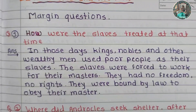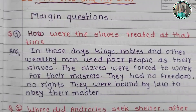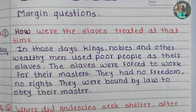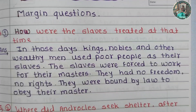Question number one: How were the slaves treated at that time? In those days, kings, nobles and other wealthy men used poor people as their slaves. The slaves were forced to work for their masters. They had no freedom, no rights. They were bound by law to obey their masters.